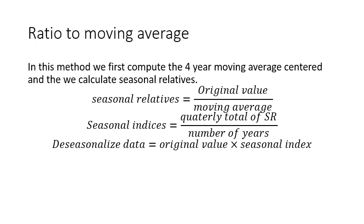Today we are going to discuss the second method for eliminating seasonal variation from the data. The second name of this method is ratio to moving average. In this method, we first compute the four-year moving average centered, and then we calculate the seasonal relative by this formula you already know: original value divided by moving average.